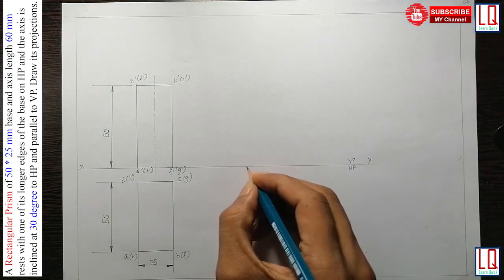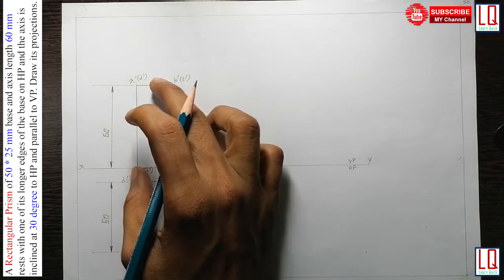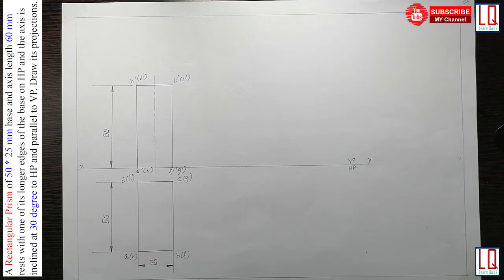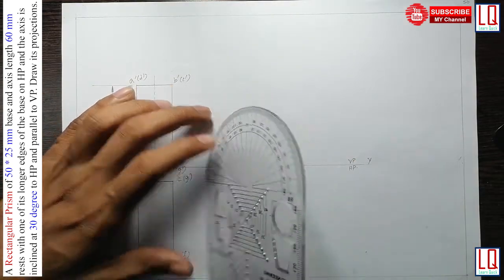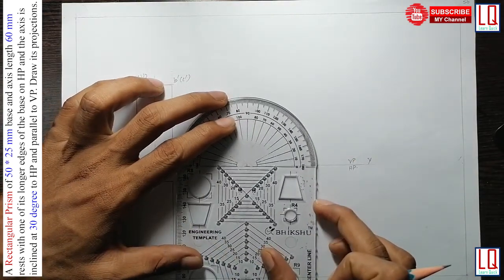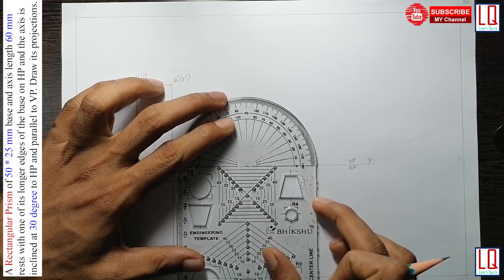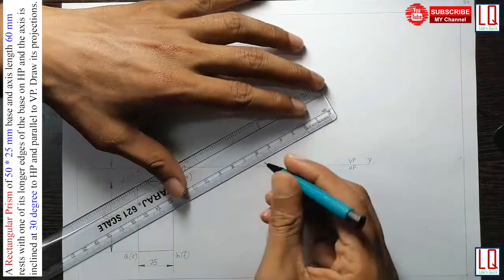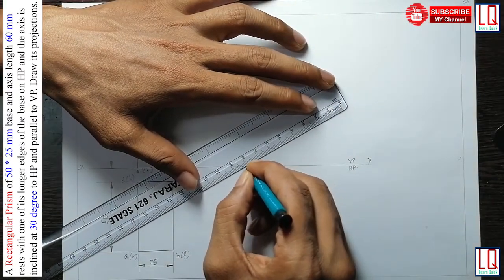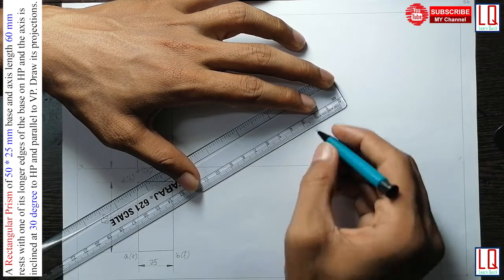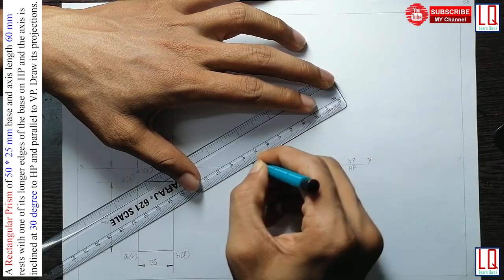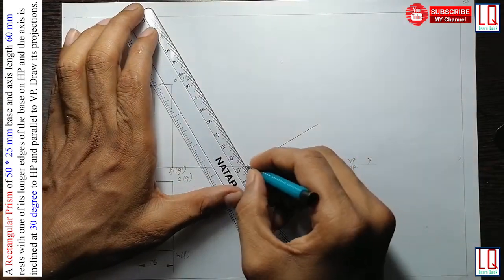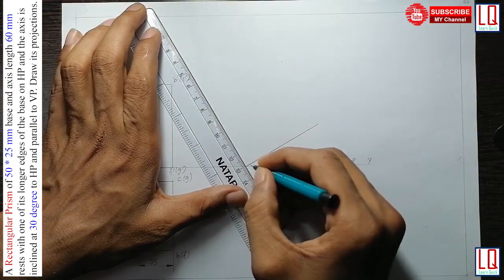So now, consider a point in your x-y line and then we are going to incline this rectangular prism at an angle of 30 degree. So mark 30 degree with the help of HB pencil draw 60 mm. So here draw 25 mm.